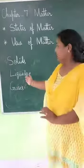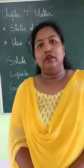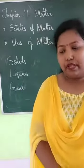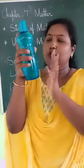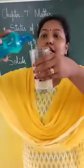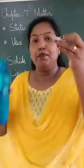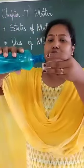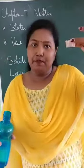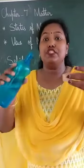Now we learn about liquid. Dear children, anything that does not have a fixed shape but has a fixed volume is called liquid. Just look at this bottle — I have water here. The water takes the shape of this bottle. But when I pour this water into the tumbler, it takes the shape of the tumbler. So liquid takes the shape of the container in which it is poured.